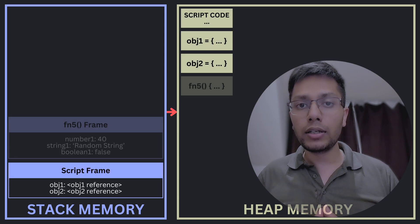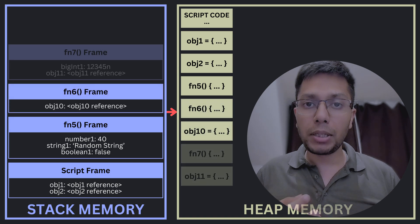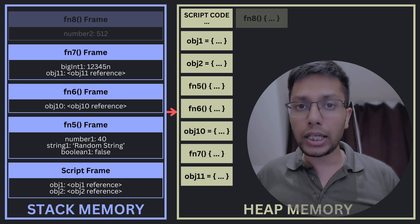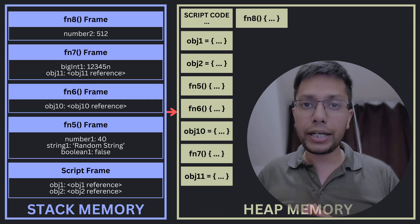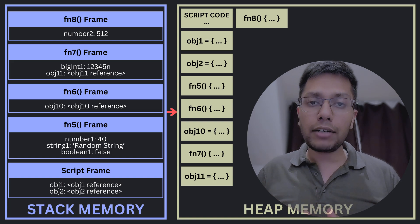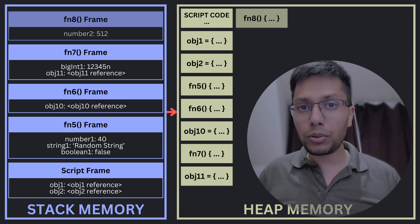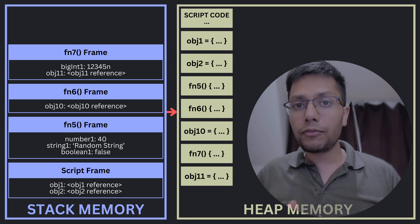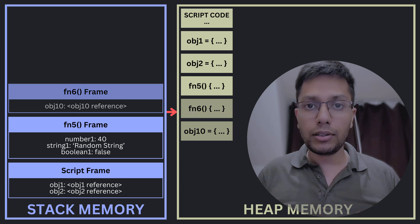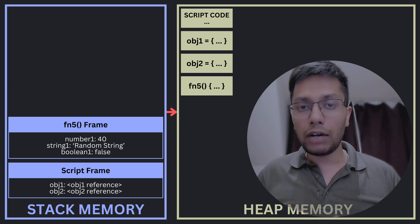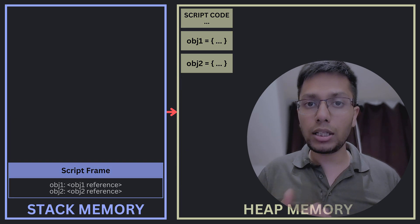The allocation and deallocation of memory in the stack is pretty straightforward. When a function is called, its variables — the primitive values and the object references — are allocated memory in the stack. When the function is done executing, the variable memories are deallocated — mostly. I will talk about this and closures in a moment.